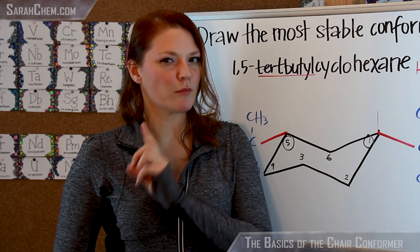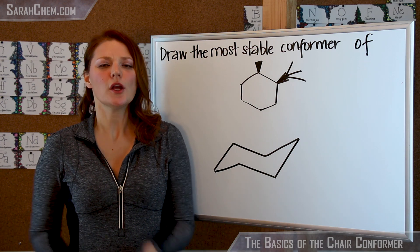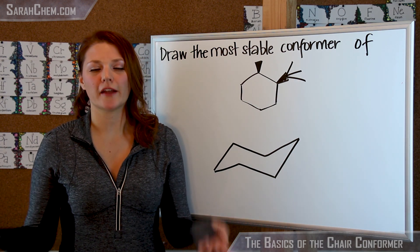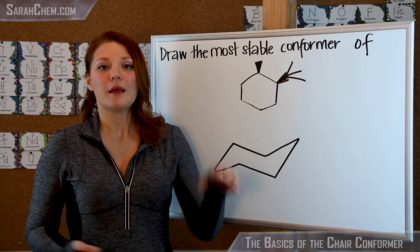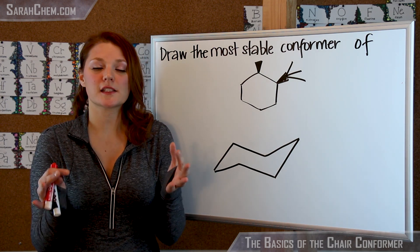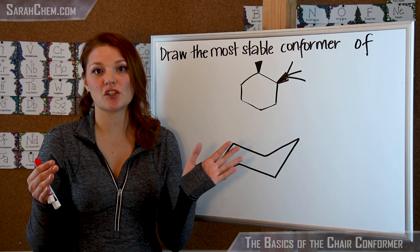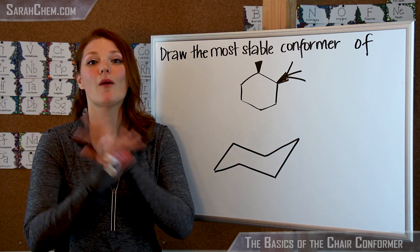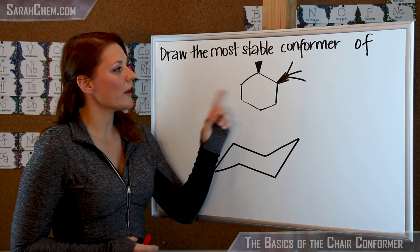So let's take a look at one more example. Okay, so now in this example here, we're asked to do pretty much the same thing, draw the most stable conformer. But in the last question you were given flexibility, you could position those substituents relative to one another however you liked.